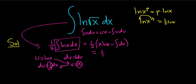All right, this is equal to 1 half x ln x minus 1 half, and then when you integrate 1 here, you just get x, and then plus our constant of integration, c.